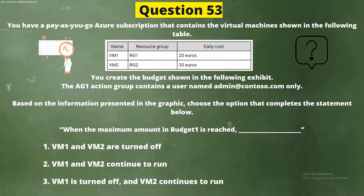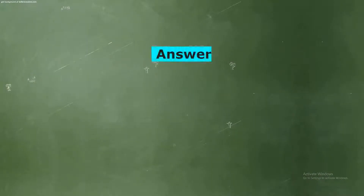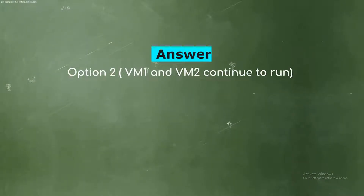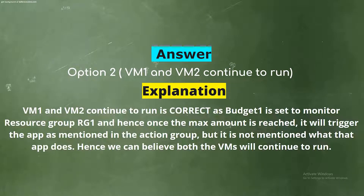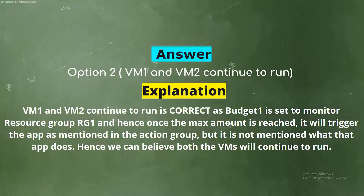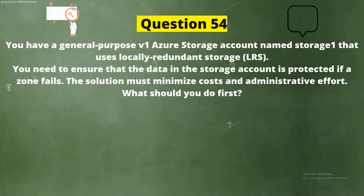The correct answer is Option 2: VM1 and VM2 continue to run. Explanation: Budget1 is set to monitor resource group RG1, and once the maximum amount is reached, it will trigger the action group. However, it is not configured to stop or deallocate the VMs — it only sends a notification. Hence, both VMs will continue to run.